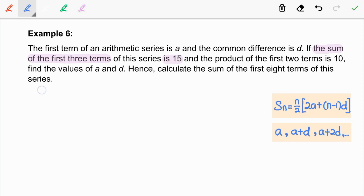This means S3 equal to 15. The second information is the product of the first two terms is 10. This means T1 times T2 equal to 10.